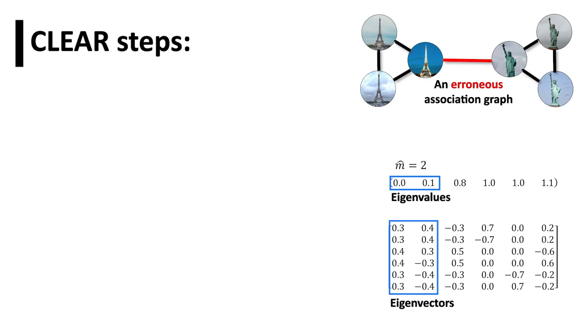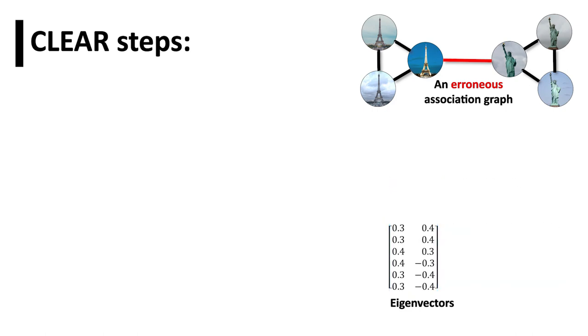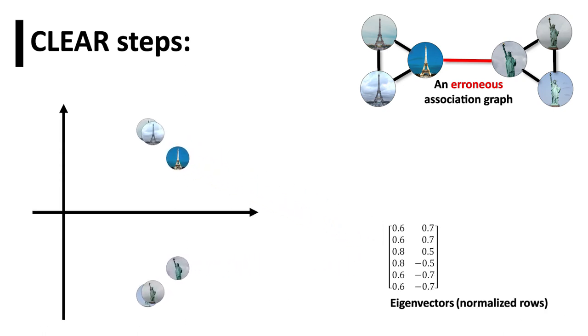CLEAR then chooses m-hat eigenvectors that correspond to the smallest eigenvalues. Rows of chosen eigenvectors are normalized and embedded as points in the space. The m-hat most orthogonal rows are then chosen as pivots, and the remaining rows are assigned to each pivot based on their distance.